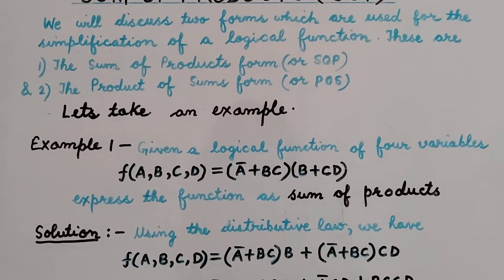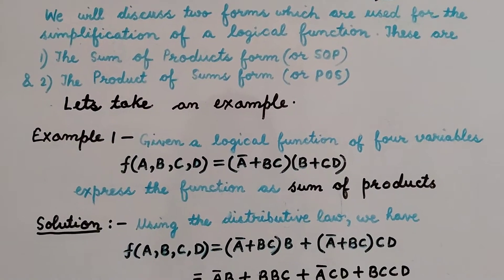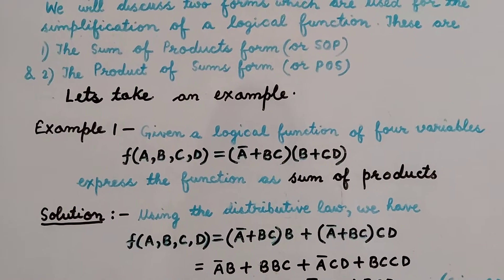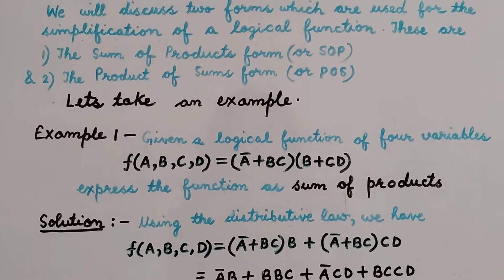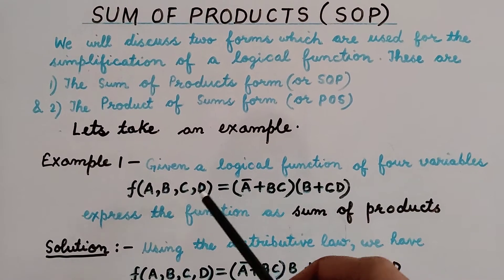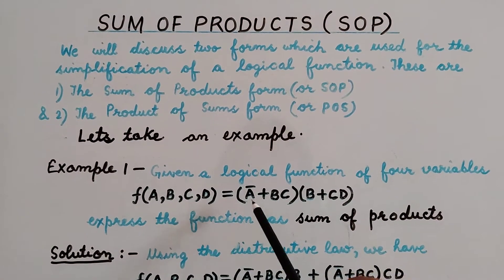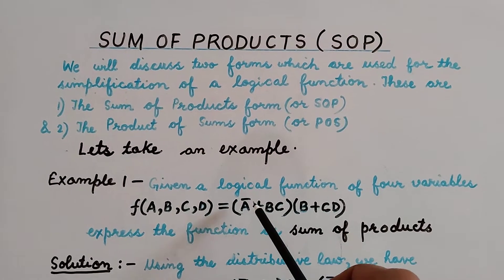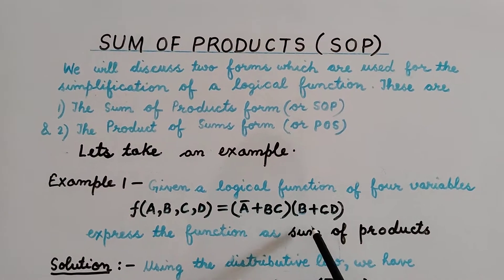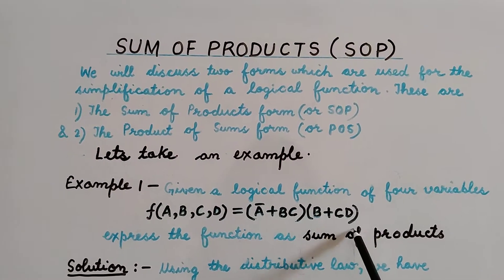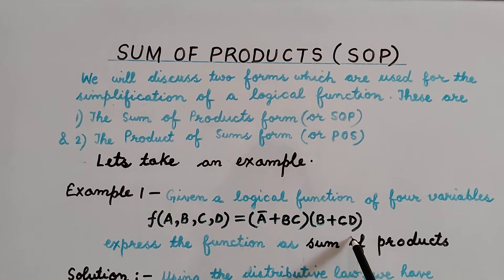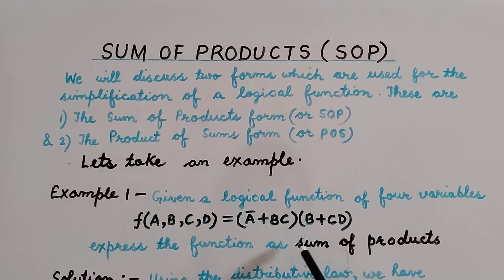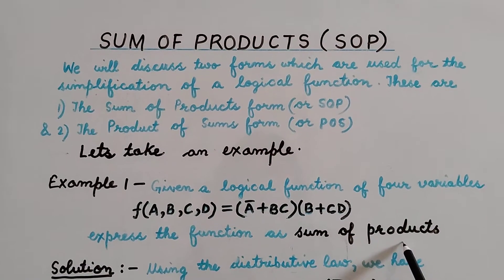Example 1 shows a logical function of four variables: F(A, B, C, D). Its value is equal to (A complement + BC) into (B + CD). We have to express this function as a Sum of Products.